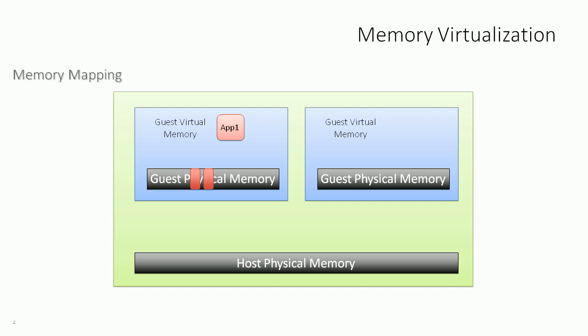The guest doesn't really have its own dedicated memory chip. In reality, the guest is allocated a certain amount of memory, and when it allocates memory to an application, those memory pages are mapped back to actual host physical memory pages. So don't let the term 'guest physical memory' throw you — just think of it as the memory the guest operating system thinks is physical. As applications launch, the guest OS allocates memory pages which are then mapped to real host physical memory.